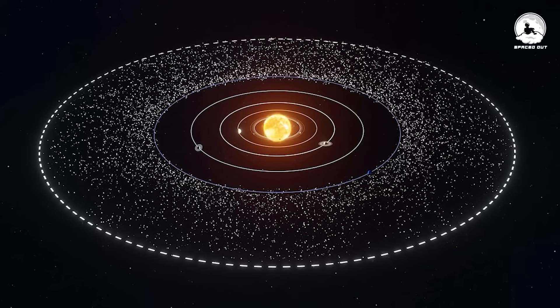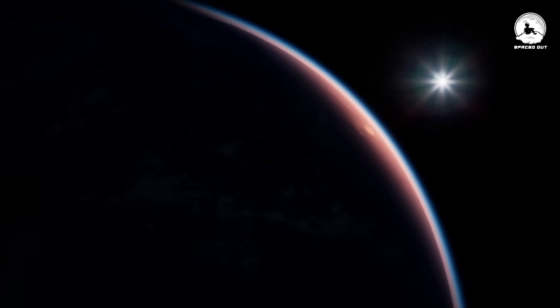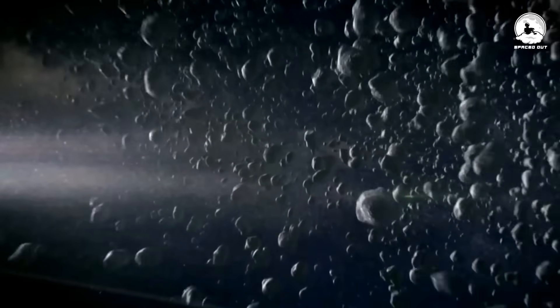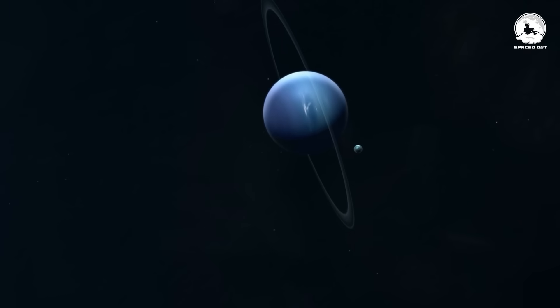Studying the Kuiper Belt has taught us that Neptune formed much closer to the Sun than where it is today and it migrated outward. Computer simulations have shown us that the KBOs we see today were shoved onto those orbits as Neptune moved.